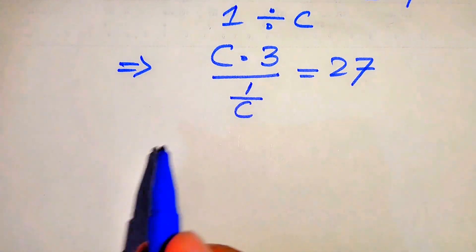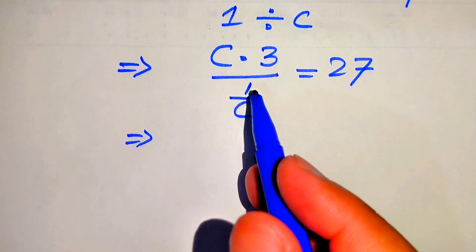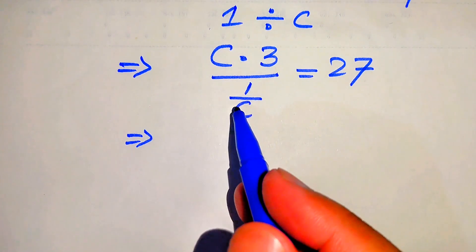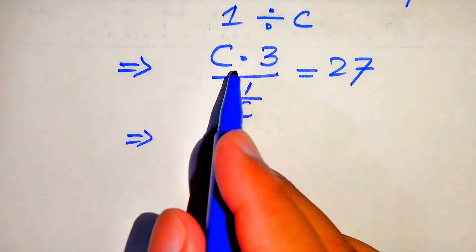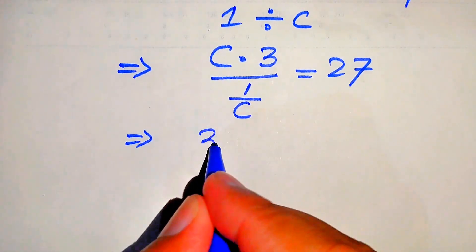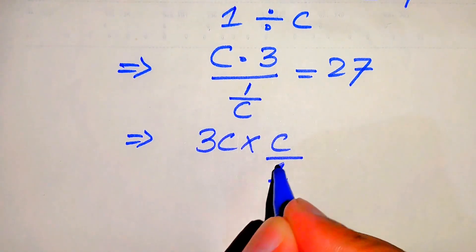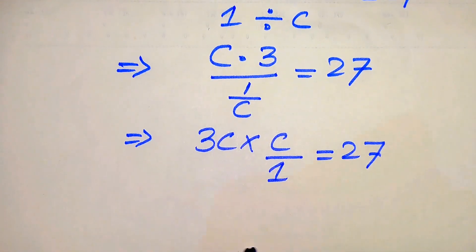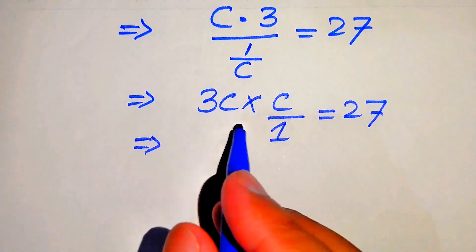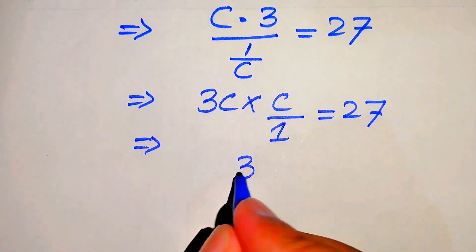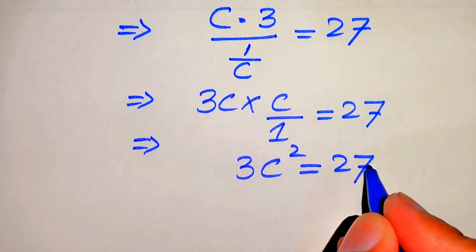Now here you see that this is the division of the division, so the terms in the denominator side become reciprocals and are multiplied by the above term. So here we have 3C multiplied by C over 1, which equals 27. When we multiply these two terms we get 3C multiplied by C equals 3C squared, and it equals 27.